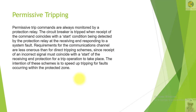Permissive schemes do not require as high security or high quality of communication as is required by DTT — this is the advantage of permissive schemes. However, permissive schemes will have some time delay because they have to wait for a permissive signal from the remote end. This delay is typically from 0 to 100 milliseconds, during which the remote relay picks up and sends the permissive signal through the communication channel.